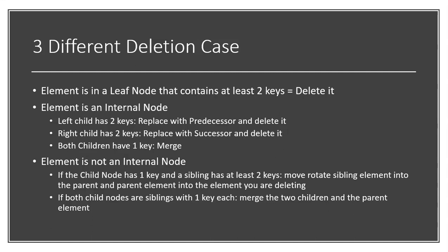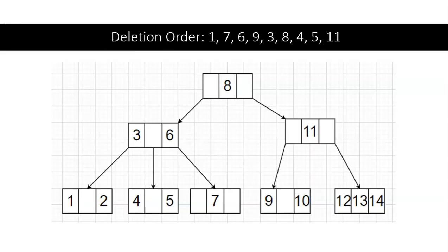Alright, let's see an example. In this 2-3-4 tree, we're going to be deleting the numbers in order of 1, 7, 6, 9, 3, 8, 4, 5, and 11.